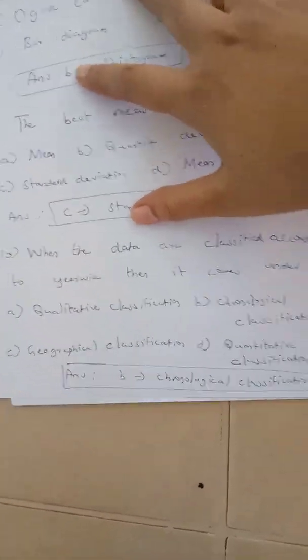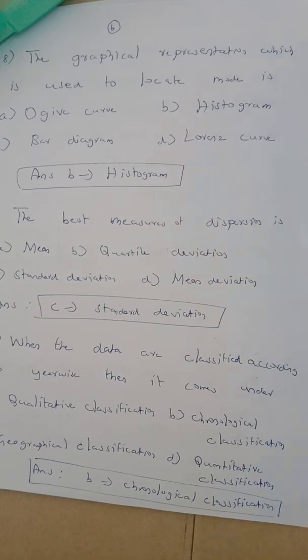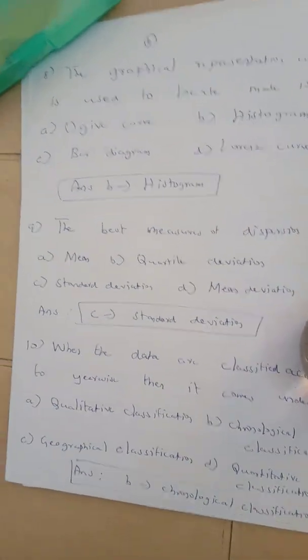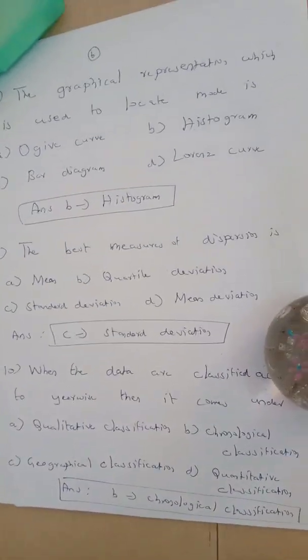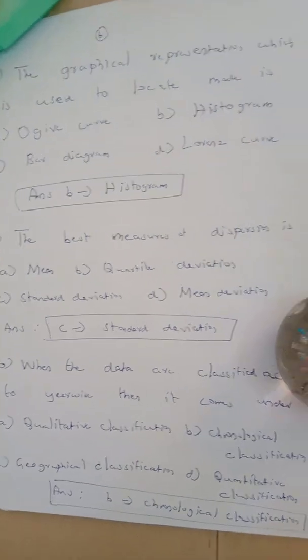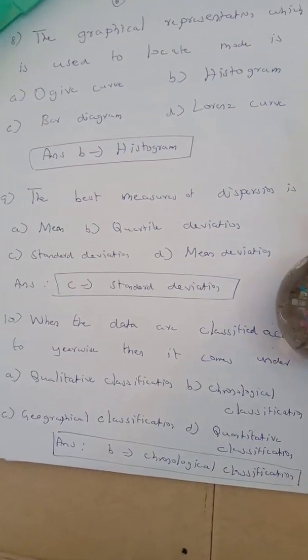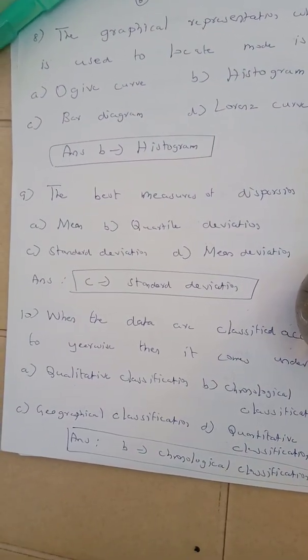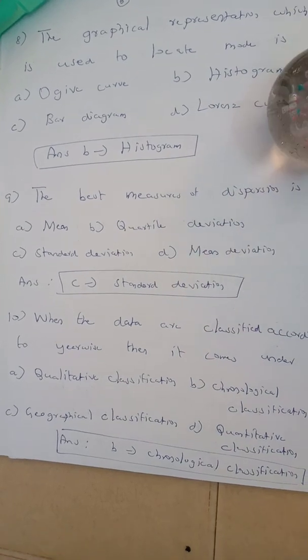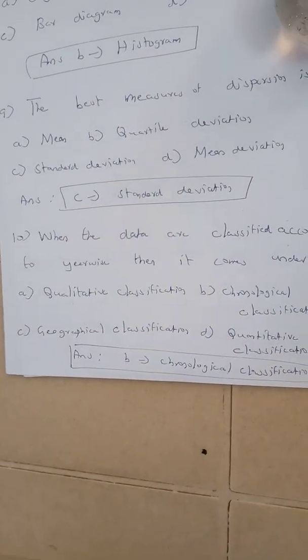Question number 9. The graphical representation used to locate the mode is histogram. The correct answer is option B. The best measure of central tendency — here the correct answer is option C. Standard deviation is the best measure of dispersion.